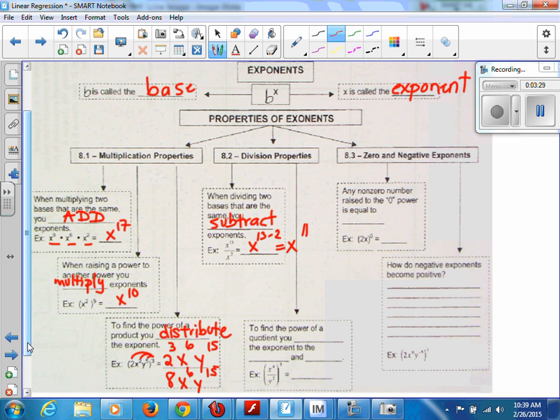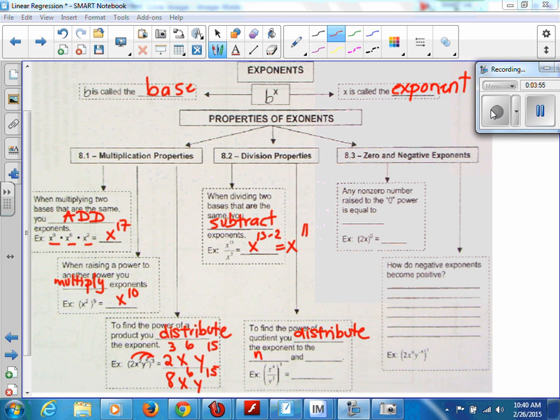To find the power of a quotient, what does quotient mean? Division. To find the power of division, you blank the exponent to the blank and blank. To find the power of a quotient, you distribute the exponent to the numerator, and I'm just going to abbreviate n-u-m, and the denominator, d-e-n-o-m.